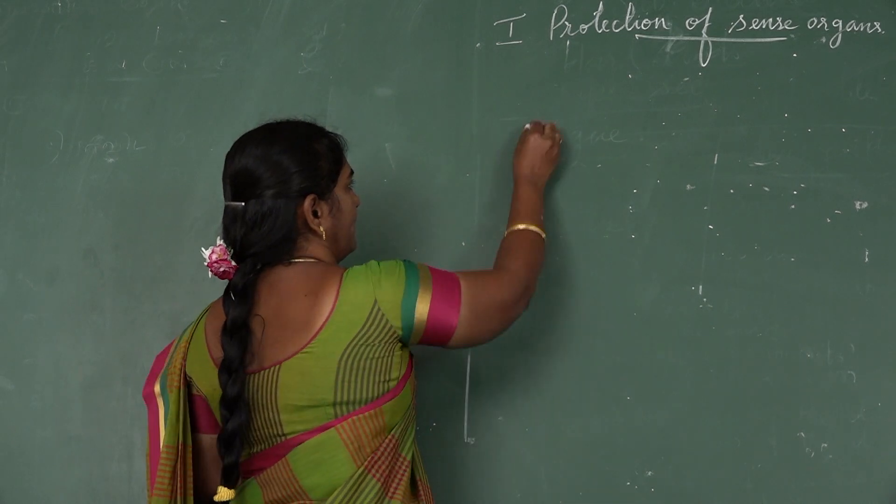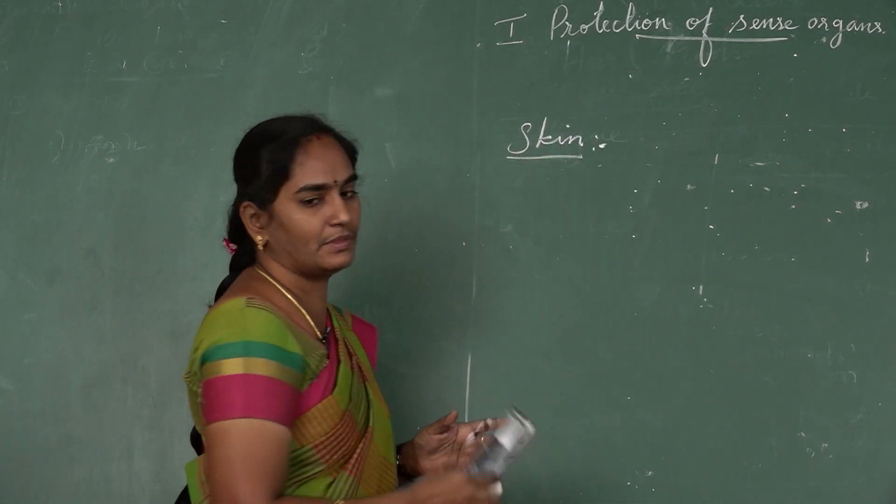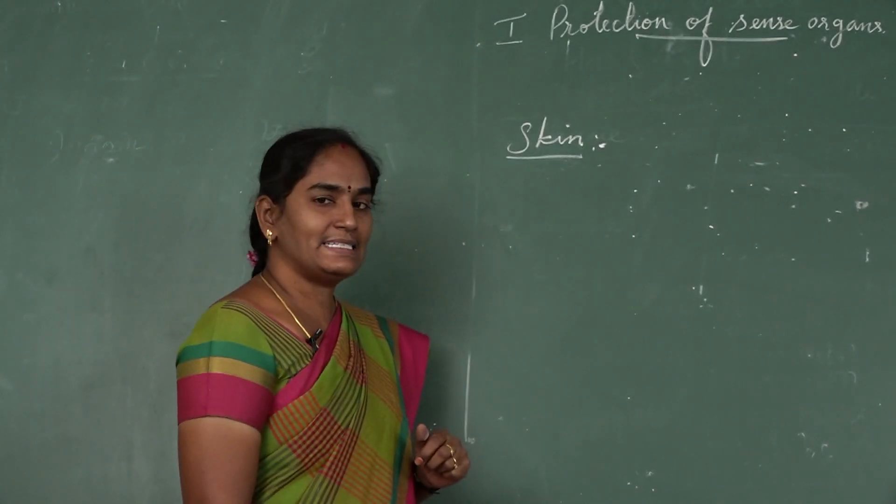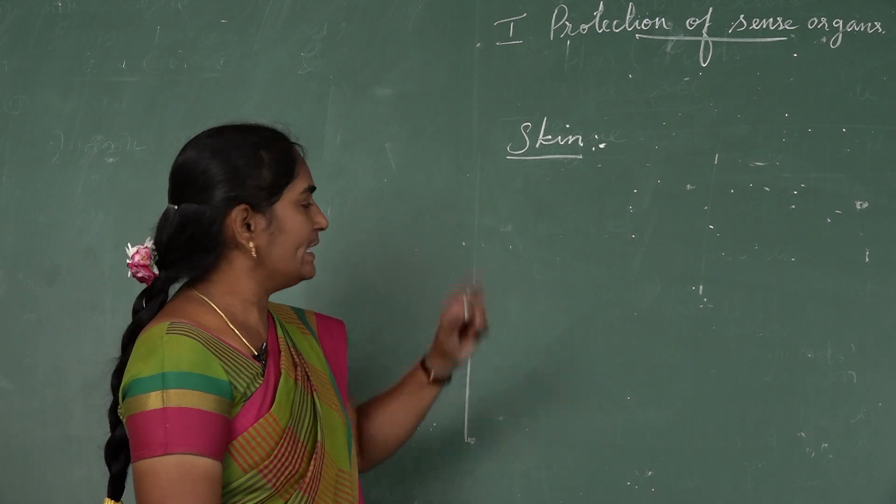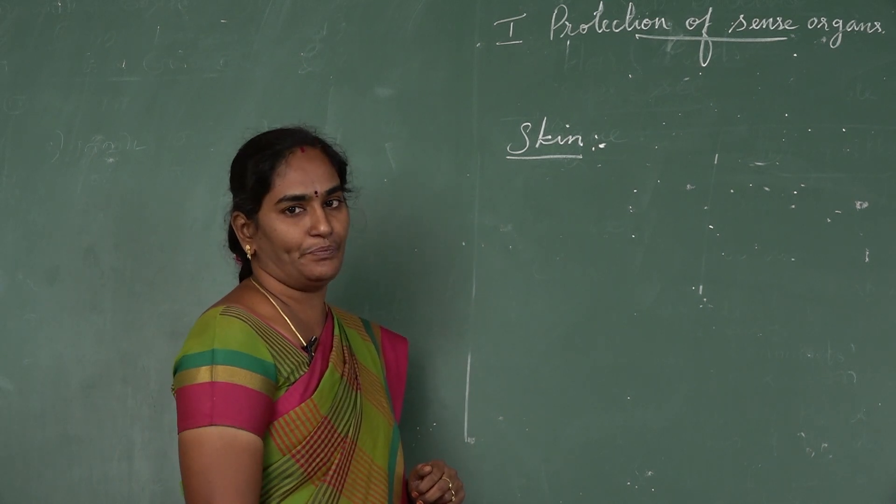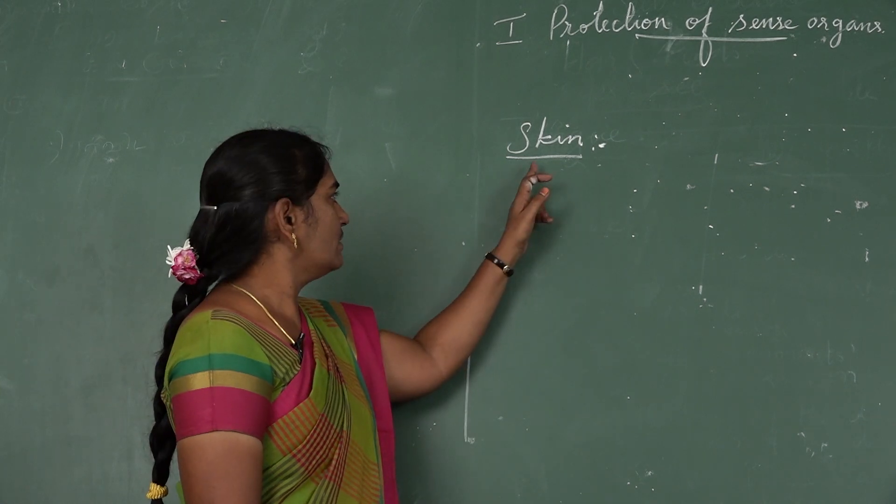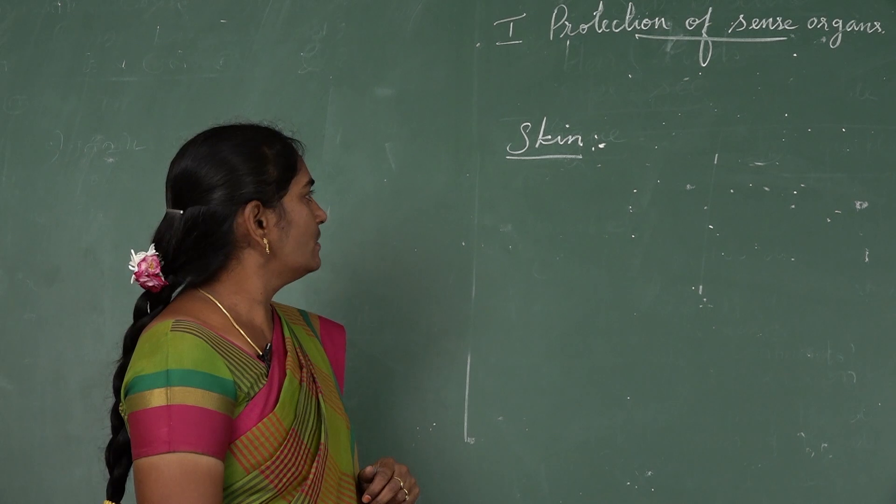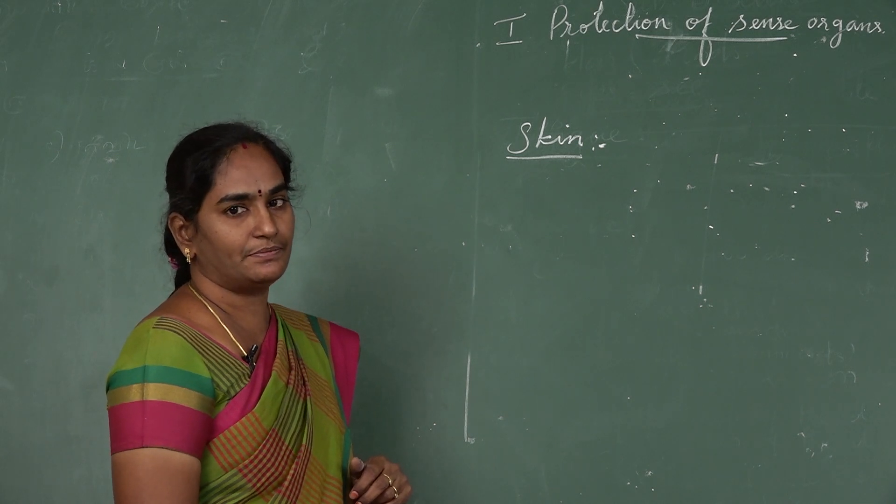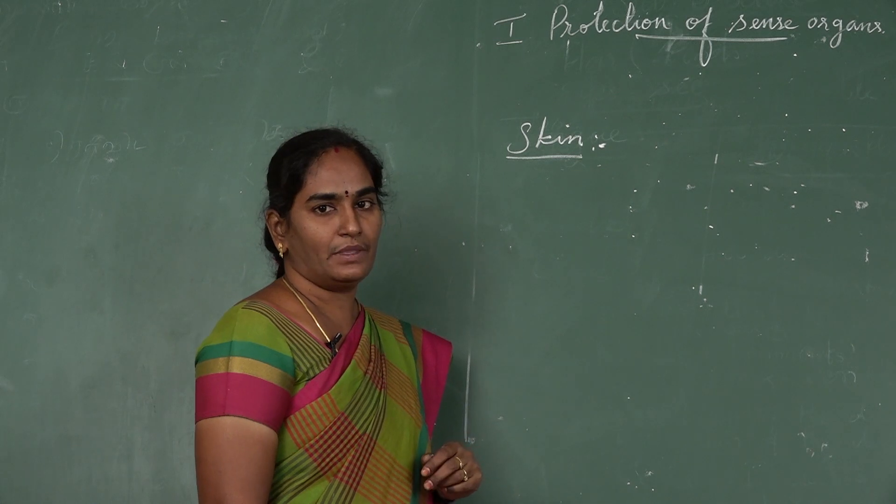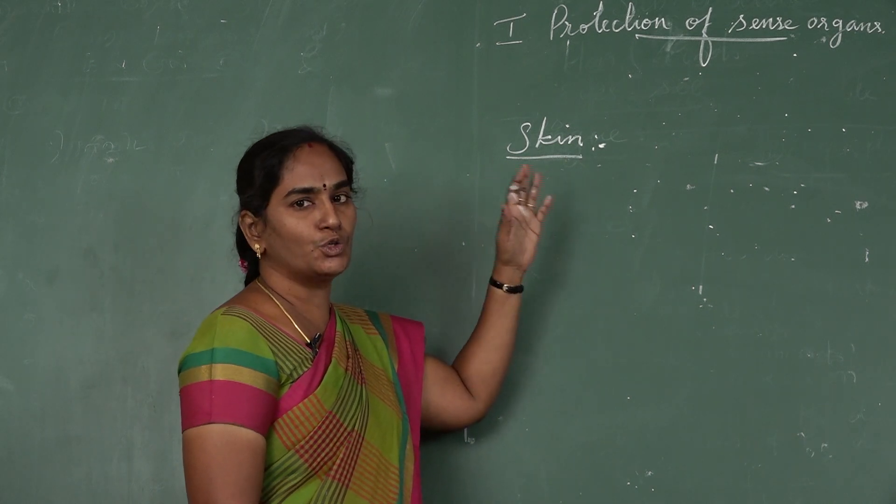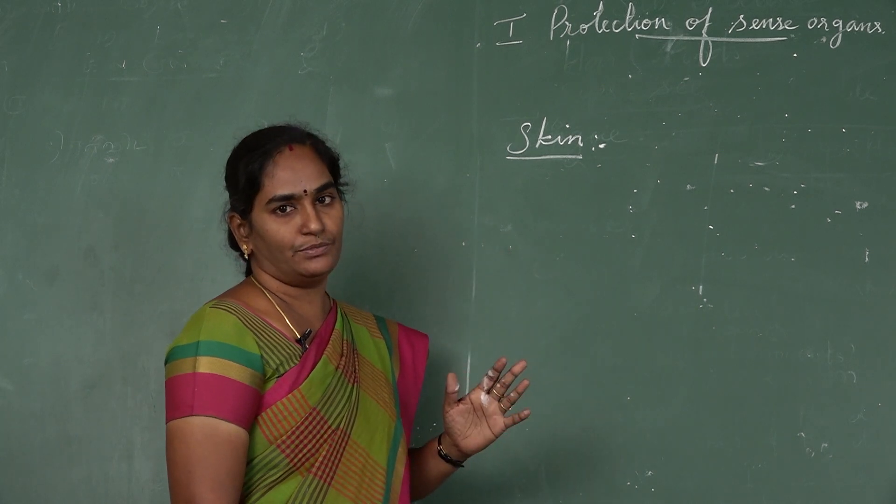Next organ is skin. Skin helps us to feel. It is the largest organ in our body and also it is one of the sense organs. The skin protects our internal organs also. How do you want to protect the skin? You want to use mild soap. Rub your skin gently with clean cloth. If you have any infections or skin injury, you must consult your skin doctor.